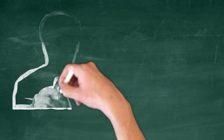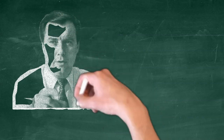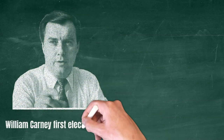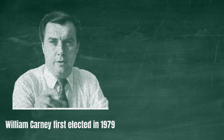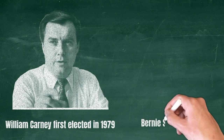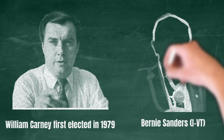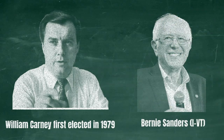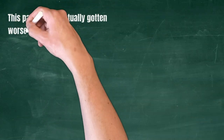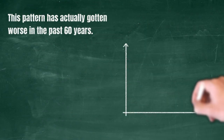The last time a candidate was elected as a third-party member was in 1979, when William Carney won a House seat from New York as a member of the Conservative Party. Since then, there have been multiple people who have won as independents, most famously Bernie Sanders, or Democrats and Republicans who have become independent, but none that were originally elected as members of any third party.